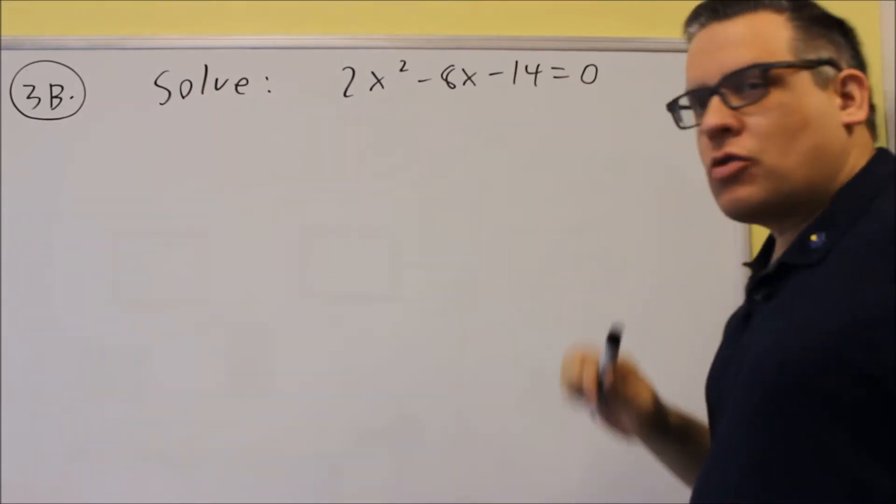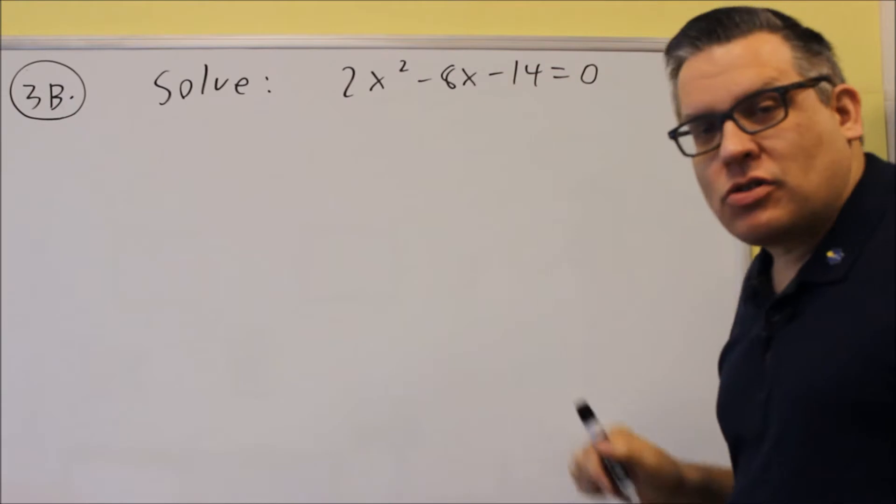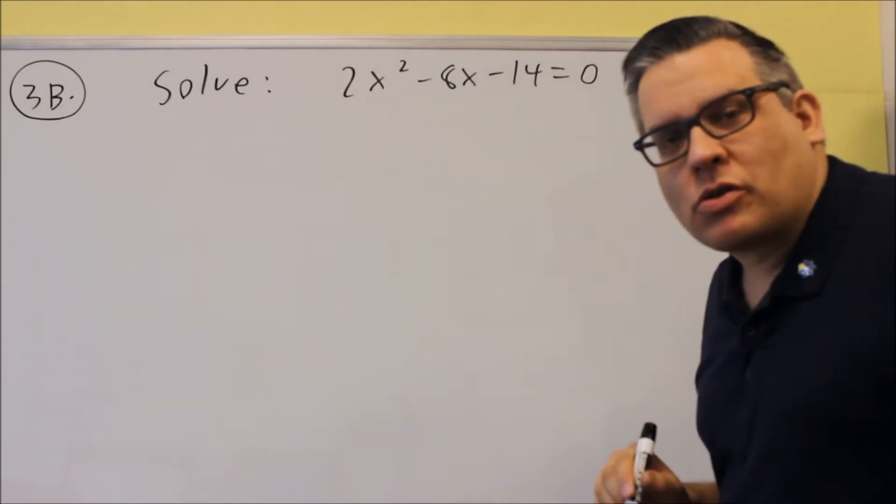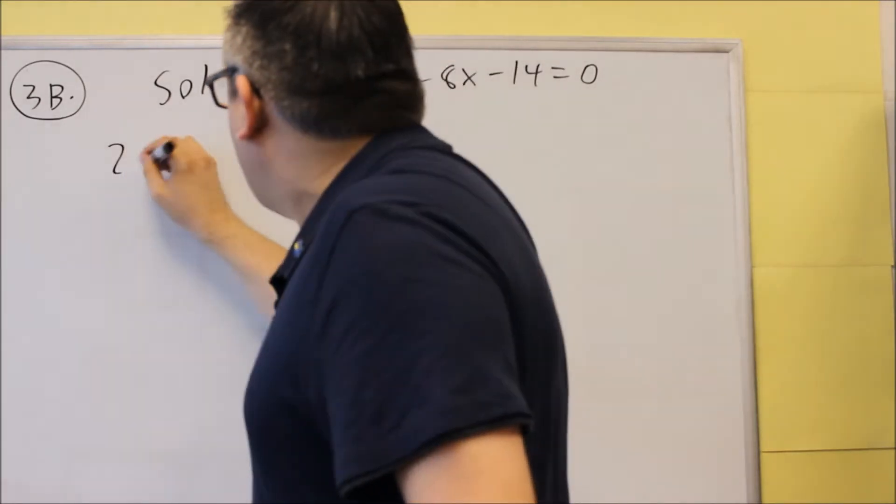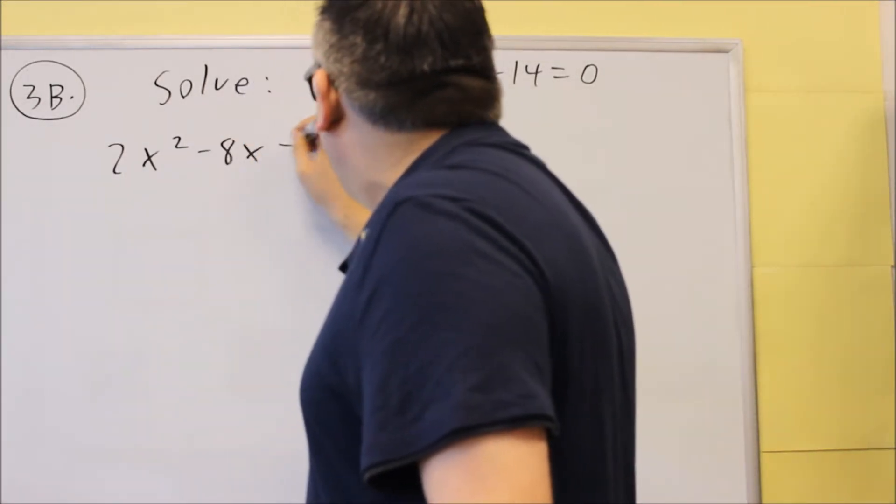So because it's set equal to 0, what I'm going to do is divide everything by 2, and this is going to make our number smaller, so it'll make the problem easier to deal with. So that's going to be my first step. I'm going to take this right here,